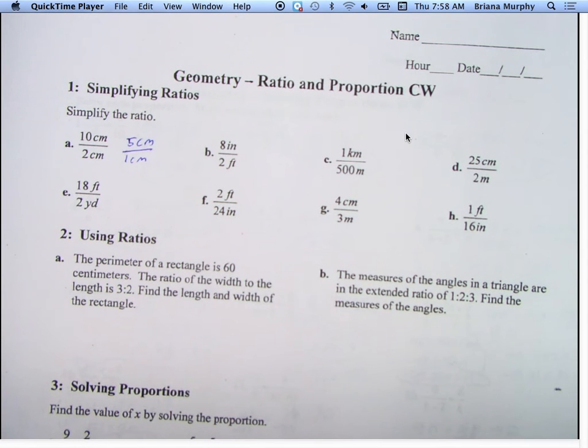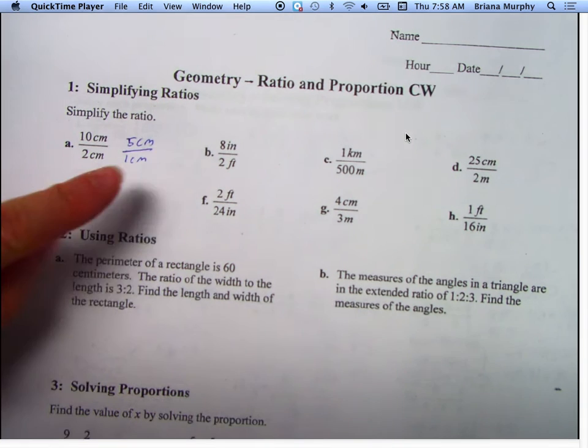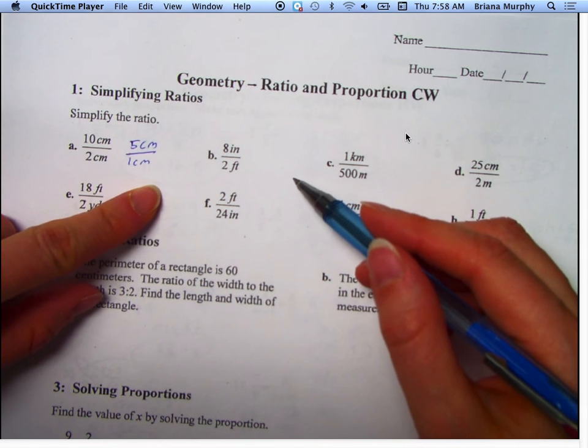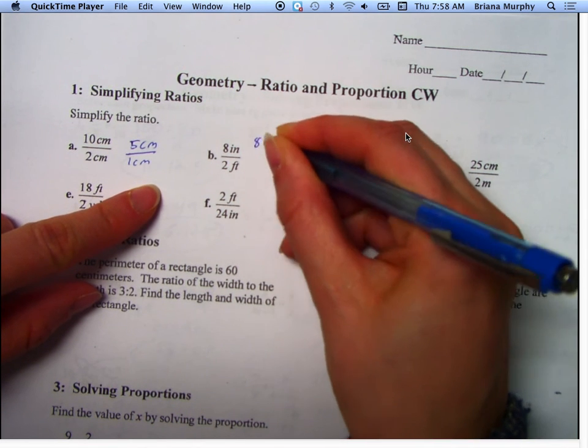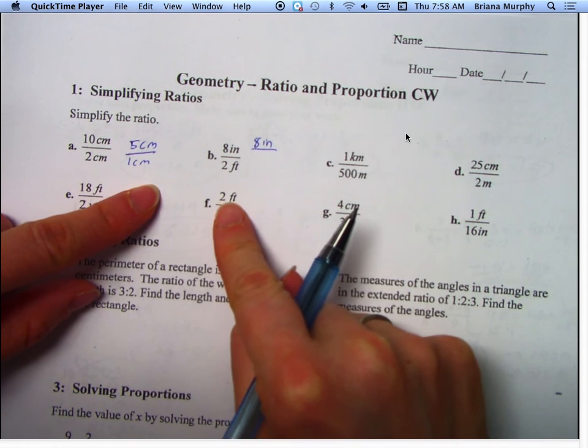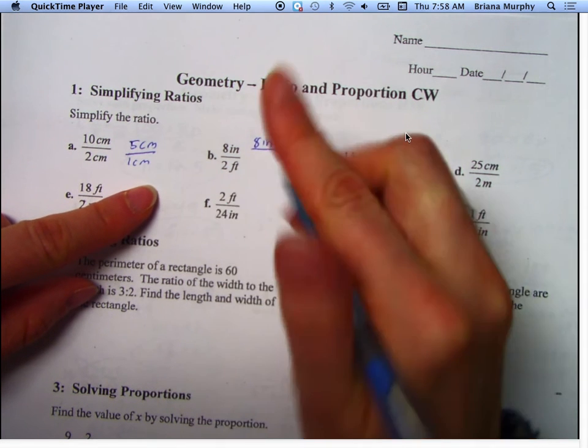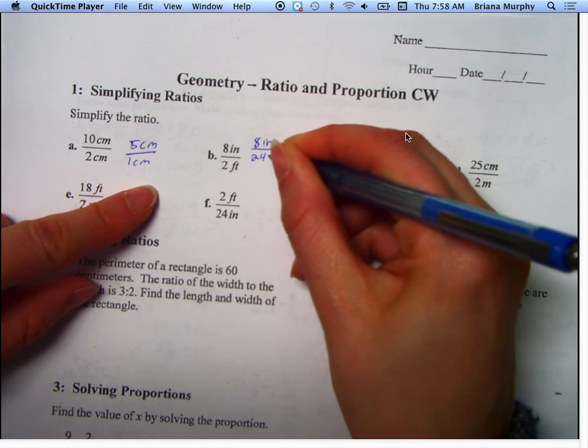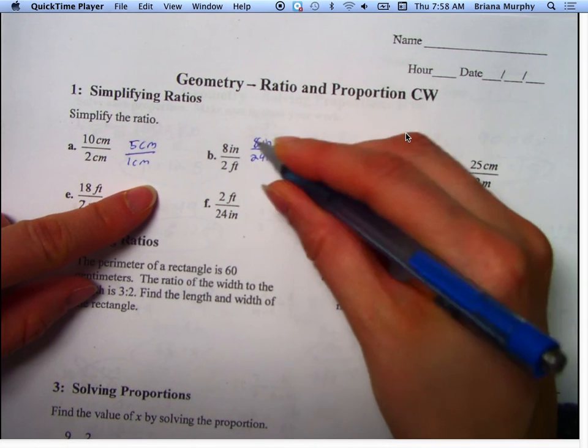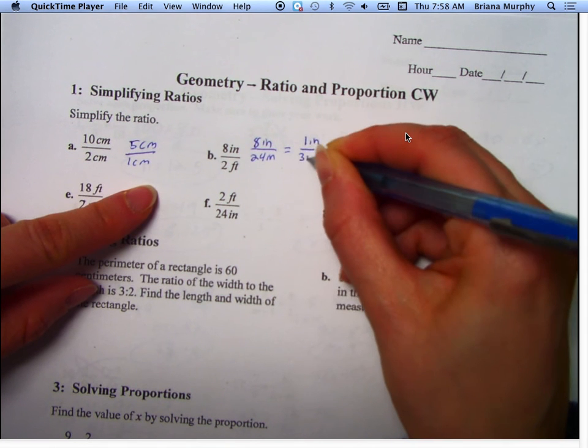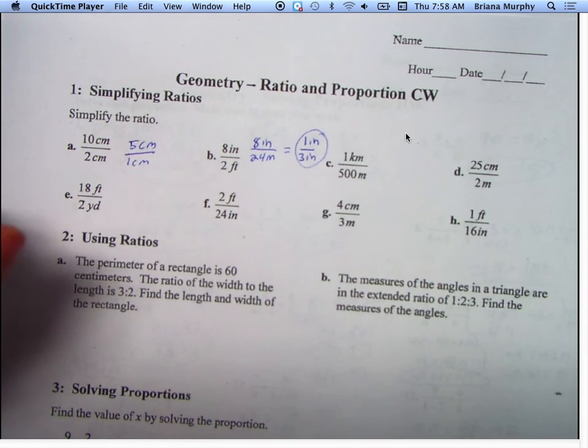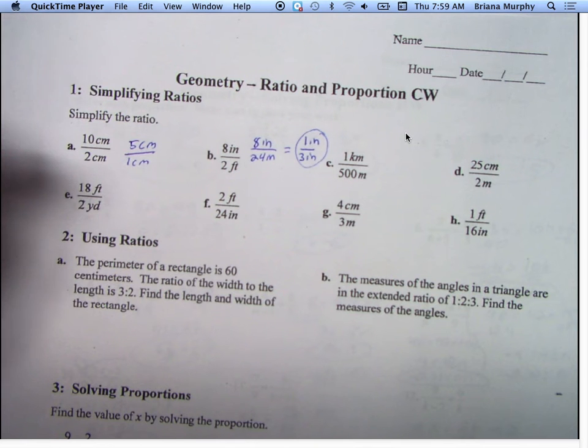Now we move on to something a little harder - we've got 8 inches and 2 feet, so we have to make them the same unit. I'm going to keep my inches the same, so instead of 2 feet, how many inches would I have? 24 inches. Now I can reduce it - 8 goes into 24 evenly, so I'm going to have 1 inch over 3 inches is what it reduces to.